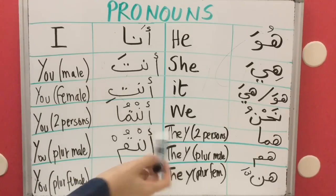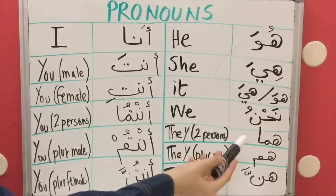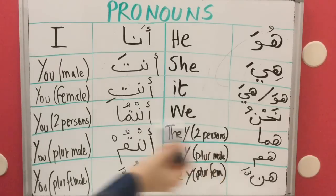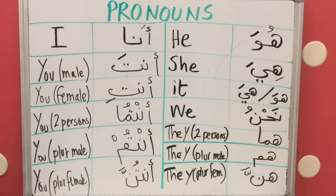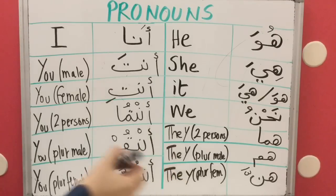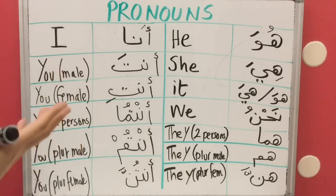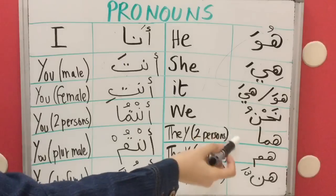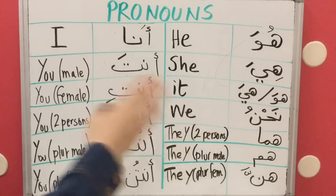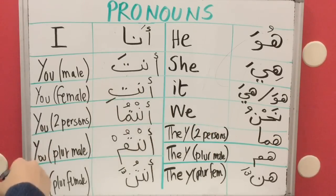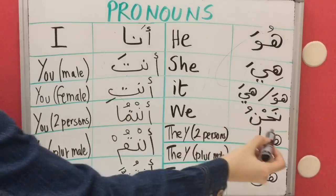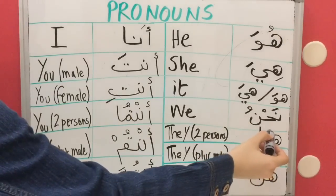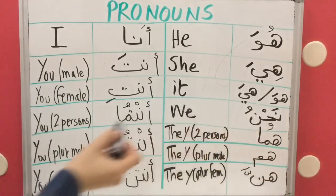If they are two people, you say 'Huma'. Huma. Huma is for male and female — it covers both genders when there are exactly two people. There is a Dhamma here: Huma.